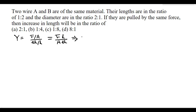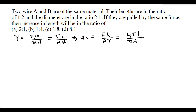From here we can write delta L is equal to FL divided by AY. Since the diameter is given, we know that the area of cross section A is equal to πD²/4. So substituting, delta L is equal to 4FL divided by πD²Y.